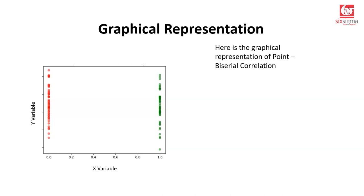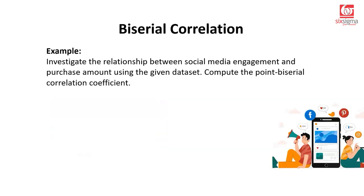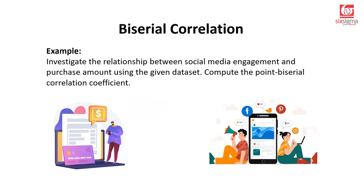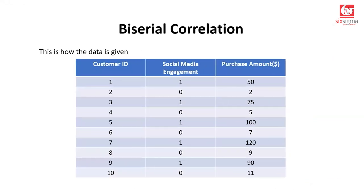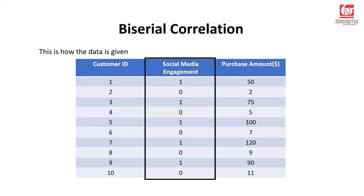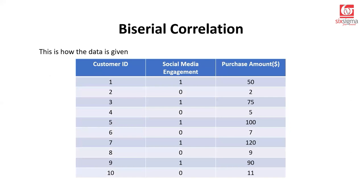We will move on to solve a numerical problem first manually, and then solve the same problem in Python. We have to investigate the relationship between social media engagement and purchase amount using a given dataset, and compute the point bi-serial correlation coefficient. We have customer ID as a serial number, social media engagement as a binary variable containing ones and zeros, and then purchase amount in dollars as a continuous numerical variable.